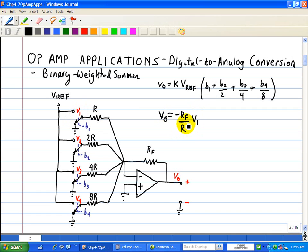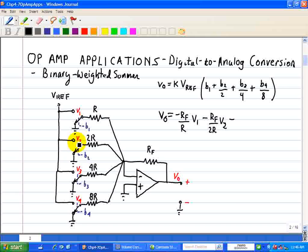Similarly, for V2, we have negative RF divided by 2R multiplied by V2. So that's our contribution due to voltage input V2.